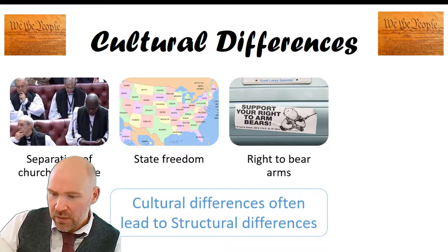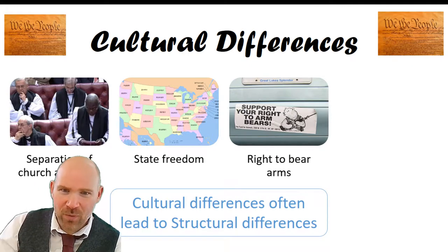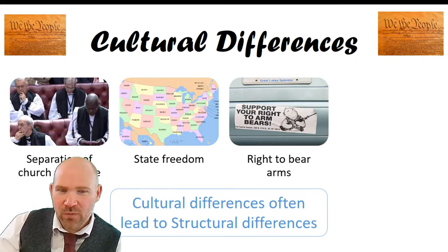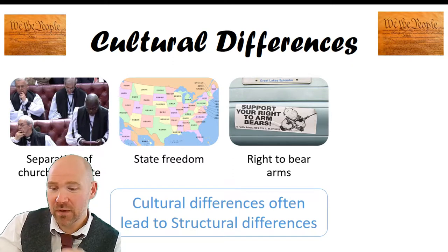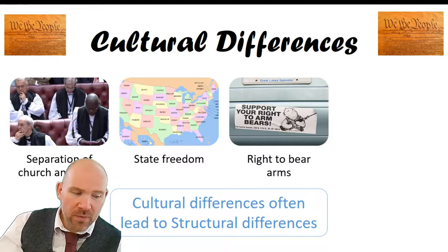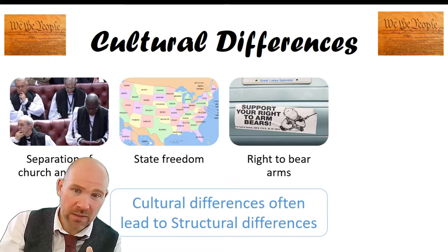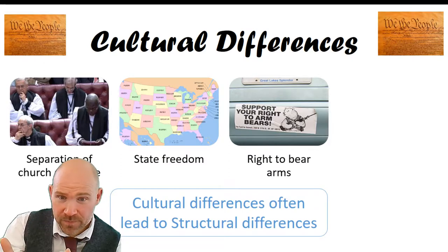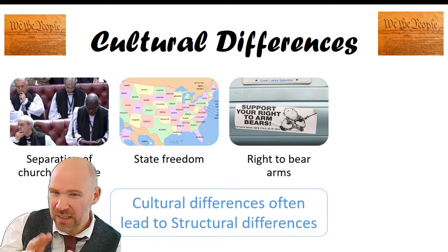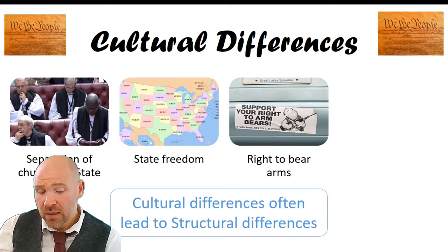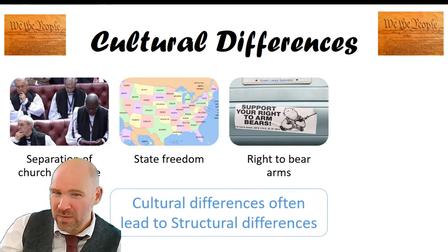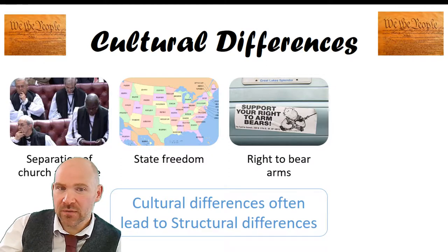The right to bear arms: when America was at its founding level there were problems with defending yourselves — from the government, from bandits, from the Wild West. People had guns to defend their farms, their country, and therefore there is a culture in America of having the right to defend yourself with your own weapons, and that then appears structurally in the constitution. Britain is the opposite — we don't have independent Scotland, Wales and England in the same way, and we definitely don't have a right to bear arms, because we've always been under some sort of authority, whether the king and queen or parliament.